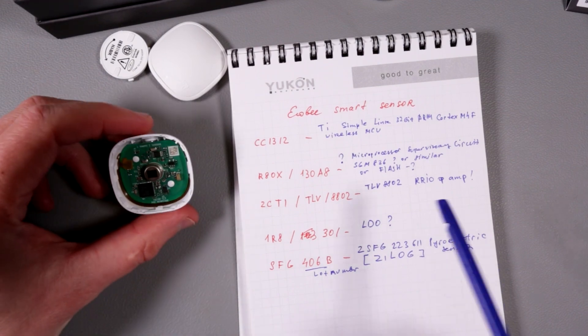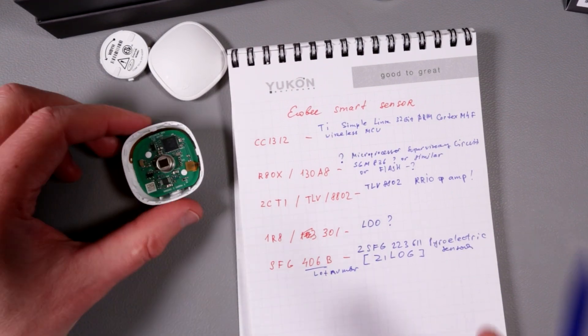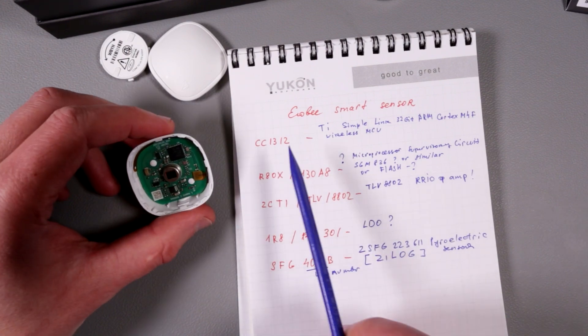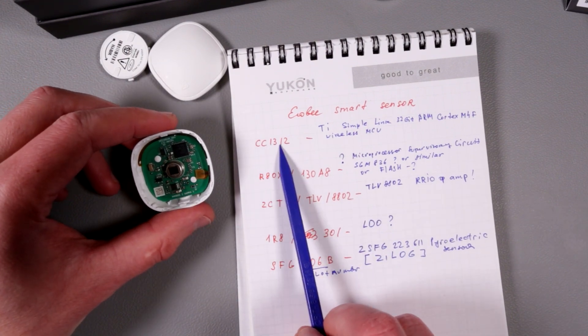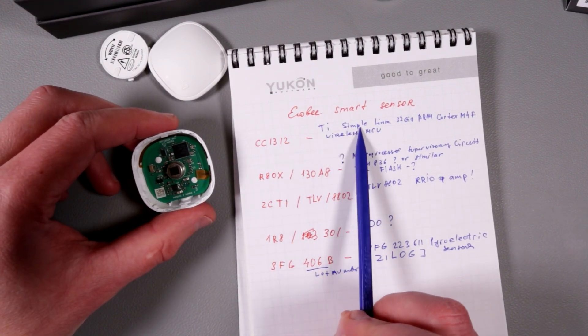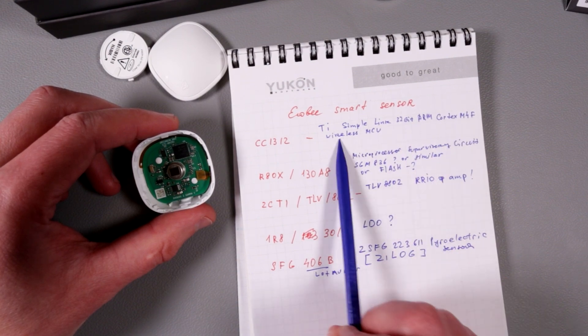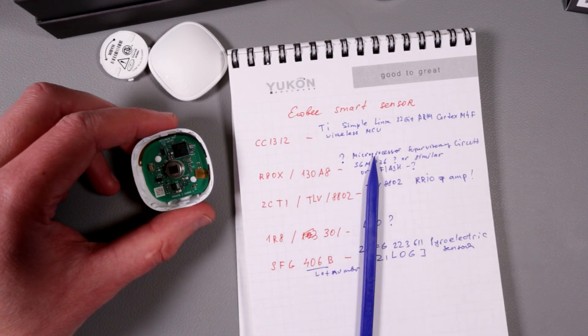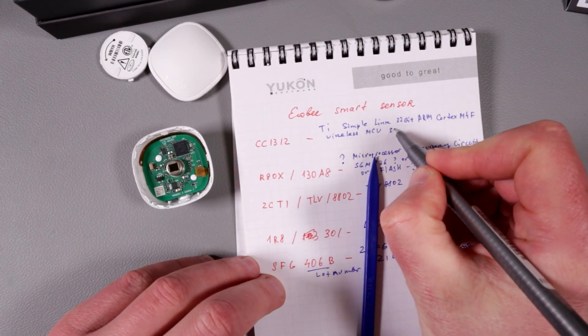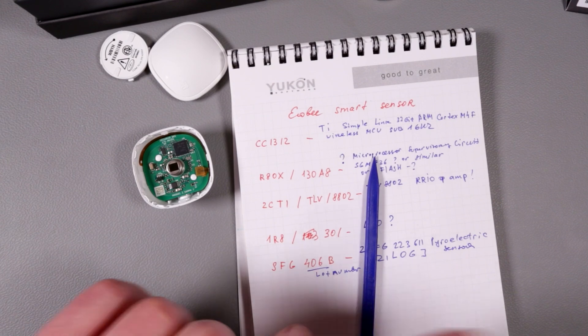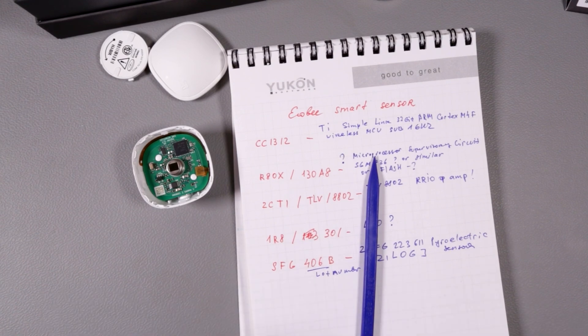Alrighty my friends, I did some investigation and figured out the following things. The heart of the operation is CC1312. This is Texas Instruments SimpleLink 32-bit ARM Cortex-M4 wireless MCU, which is pretty cool. This guy is sub-one gigahertz.